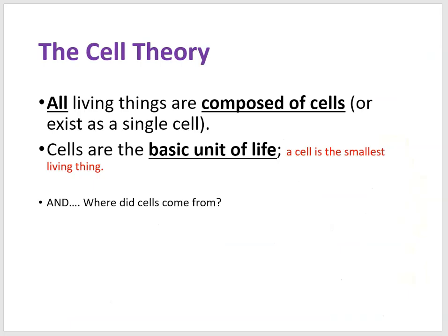At this point, our second pillar is well established: cells are the basic unit of life and a cell is the smallest living thing. Cells are made of molecules which themselves are not alive — not even DNA is alive. As for the third principle of the cell theory, it will answer the question of where cells came from, and we'll take that up in the next lesson.